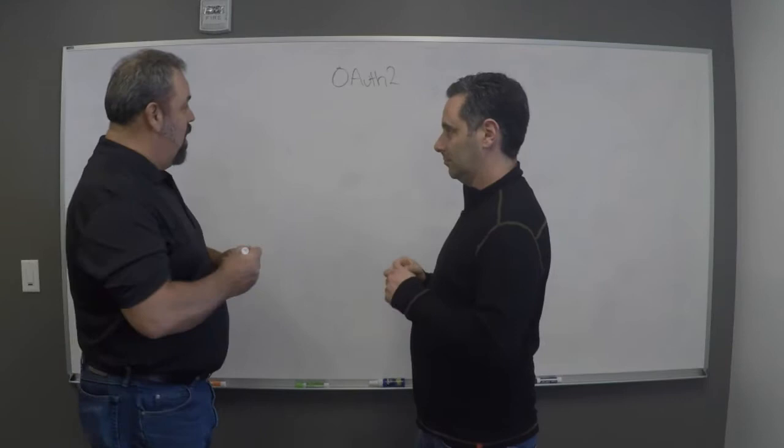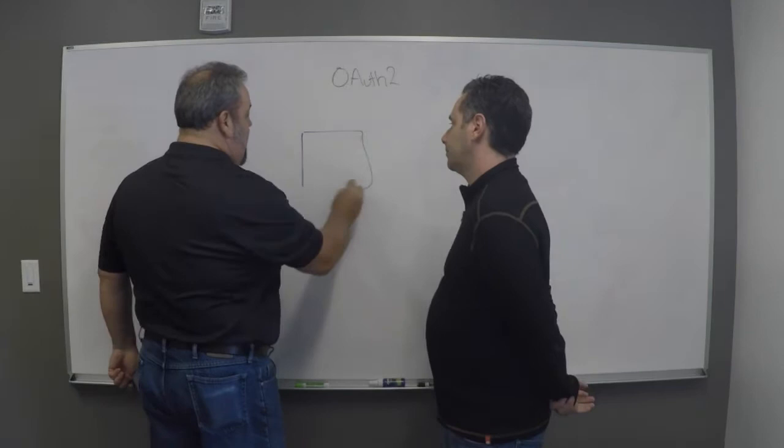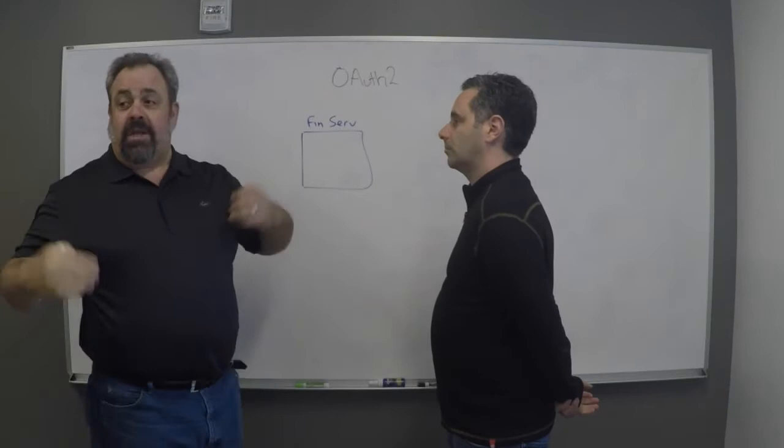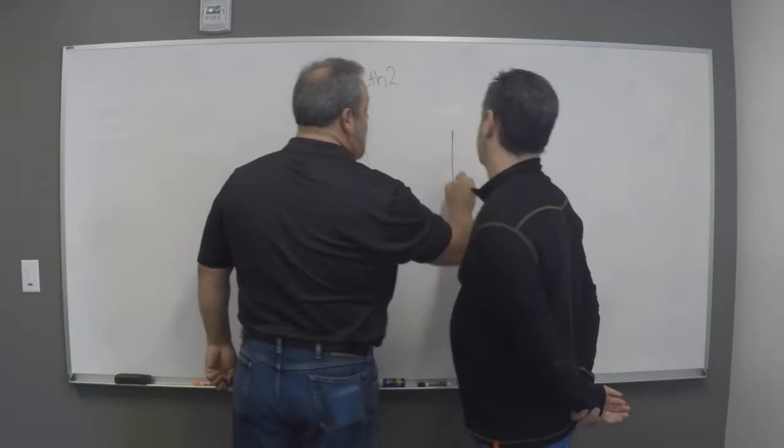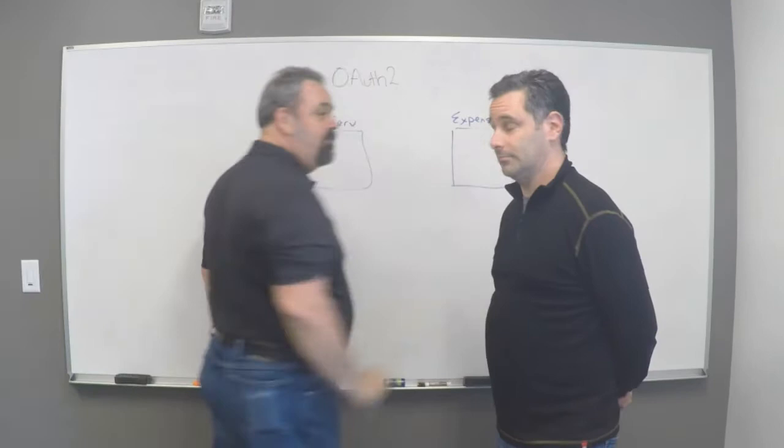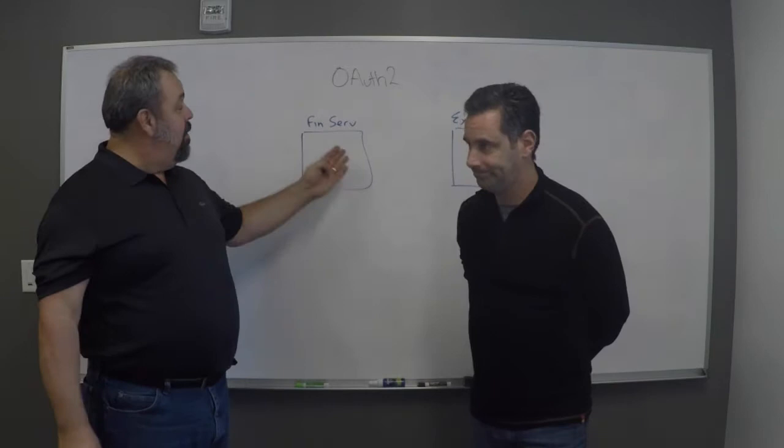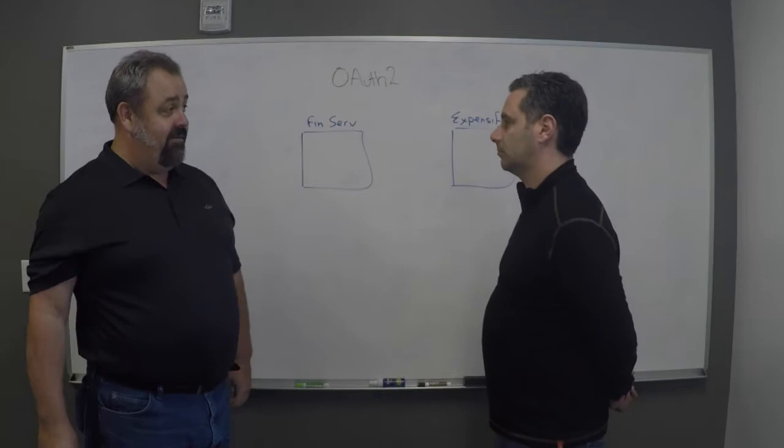An interesting use case that we've got, and in fact we do it right here in this company, we have a financial services FinServ, which is maybe your American Express card, and you've got that into the account. We have another application over here which is Expensify. We all use Expensify, and Expensify says it's really convenient, I can go and have a look at your Amex account and I'll bring all of those expenses in. So how do we do that?